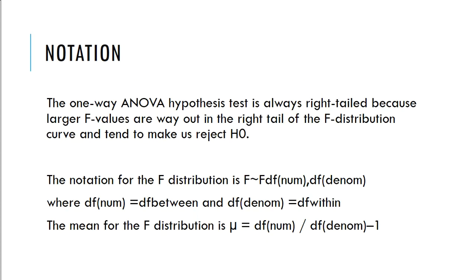So the notation. The one-way ANOVA hypothesis test is always right-tailed because the larger F values are way out in the right tail of the F distribution curve and tend to make us reject the null. The notation for the F distribution is F tilde F degrees of freedom numerator, comma, degrees of freedom denominator, where DF numerator equals DF between and DF denominator equals DF within.